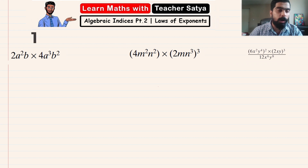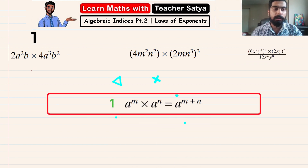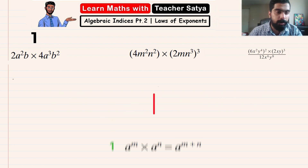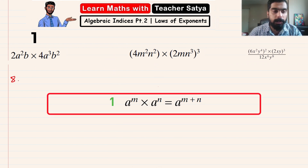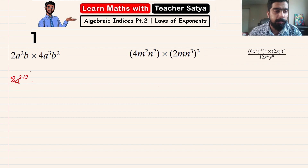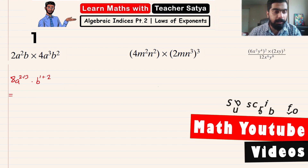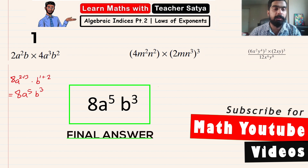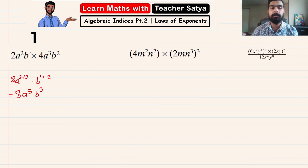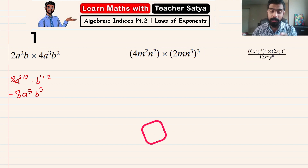In question number one, we are going to use law number one. Two multiplied by four gives us eight. Now a squared multiplied by a to the power of three, using law number one, gives us a to the power of two plus three, multiplied with b to the power of one plus two. The final answer is 8a to the power of five and b to the power of three. Keep in mind that whenever you see just a variable by itself, it is raised to the power of one — this is where many students make mistakes, writing b to the power of two instead of three.